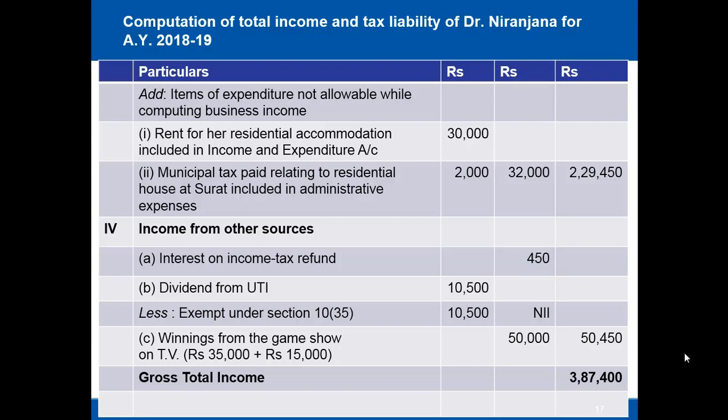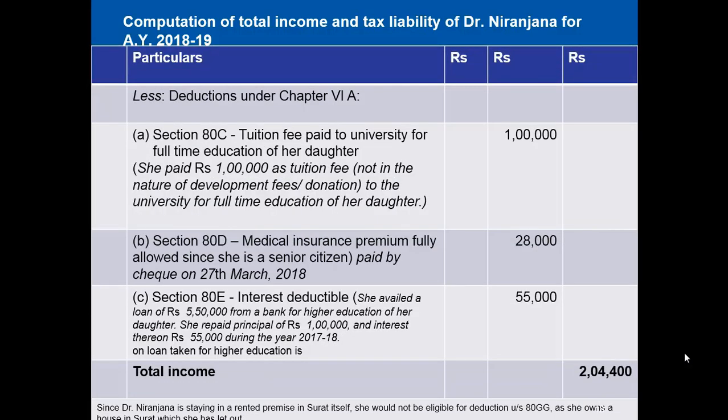Deductions under Chapter VI-A: Under section 80C, tuition fee of rupees 1 lakh paid to university for full-time education of her daughter is fully allowed (limit is rupees 1 lakh 50 thousand). Under section 80D, medical insurance premium of rupees 28,000 paid by cheque on 27th March 2018 is fully allowed since she is a senior citizen. Under section 80E, interest of rupees 55,000 on the education loan availed from a bank for her daughter's higher education is fully deductible.